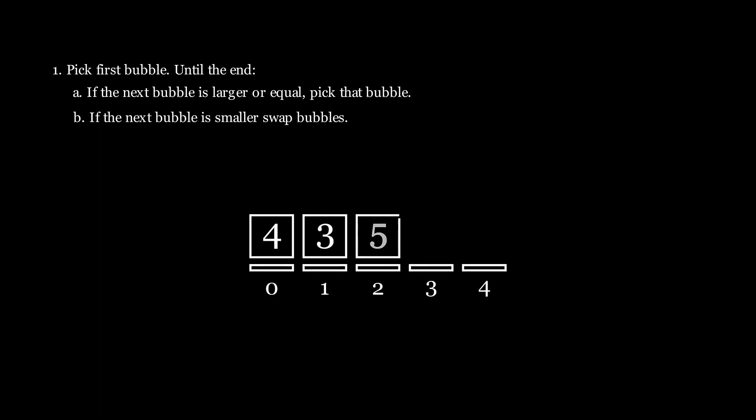First, we update the terminology in our rules from bubbles to numbers in a computer. Pick the first value and repeat the following until the end. If the next value is larger or equal, pick that value. If the next value is smaller, swap places with that value.